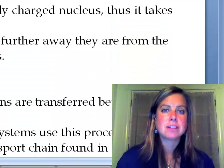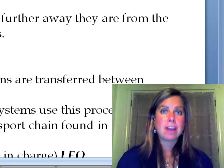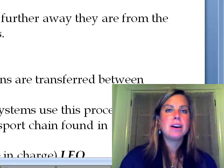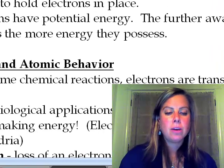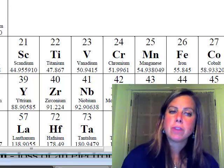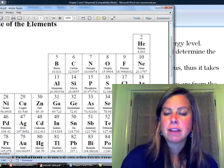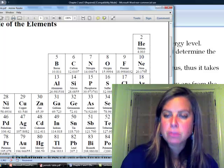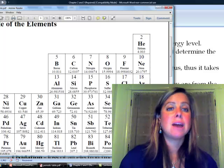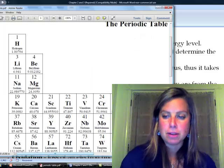What we're really worried about with reactivity is what are called valence electrons — the electrons in the outermost energy level. In the periodic table, we have what I call the wimps over on the left, the bullies to the right of center, and the rightmost column, which we call the snobs of the periodic table. I'll explain why in just a moment.